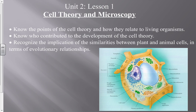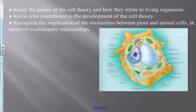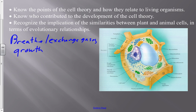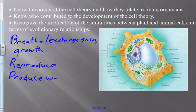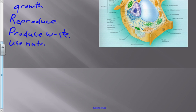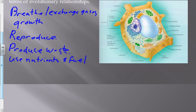Let's brainstorm quickly: what are some things an organism would have to do to be considered alive? Exchange gases, growth — plants grow toward the sun, animals grow. Reproduce. Produce waste. Use nutrients and fuel. So we've got: breathe or exchange gases, growth, reproduce, produce waste, use nutrients and fuel.